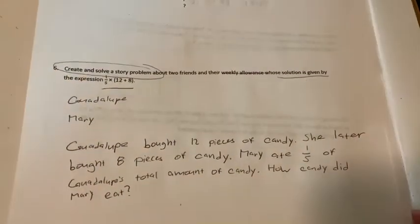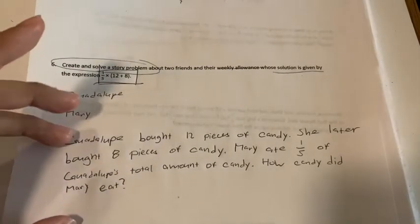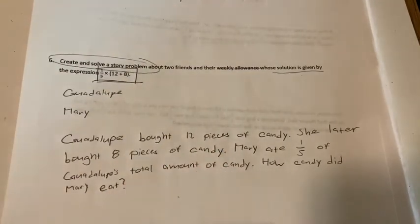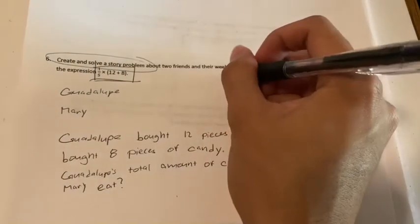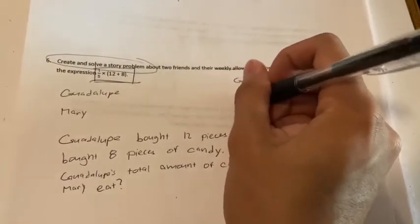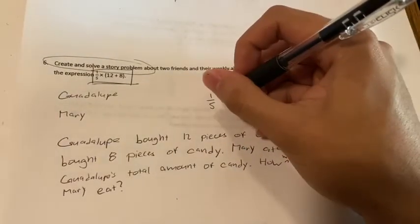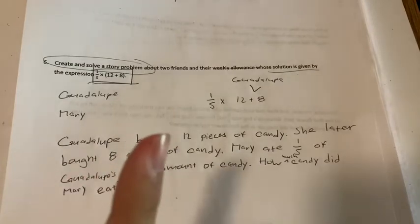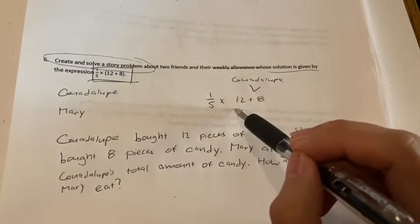So how do we solve this problem right here? We have to make sure that it's solved by this equation. So let's say that you were to come across this problem right here. Guadalupe bought 12 pieces of candy. She later bought eight pieces of candy. Mary ate a fifth of Guadalupe's total amount. We're going to have to start off with how much Guadalupe bought. And she bought 12 plus 8, right? And then Mary ate a fifth of that.